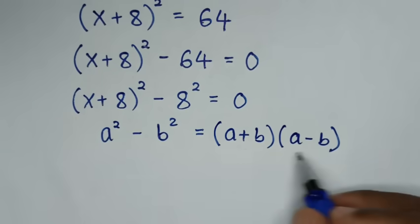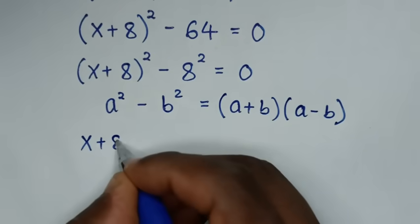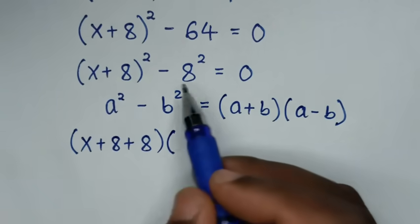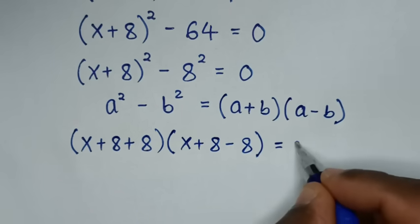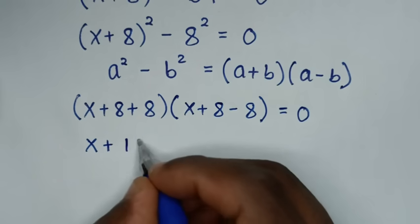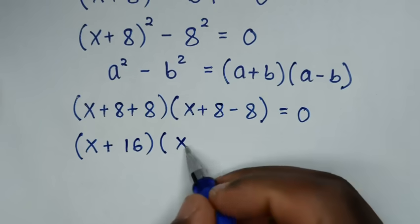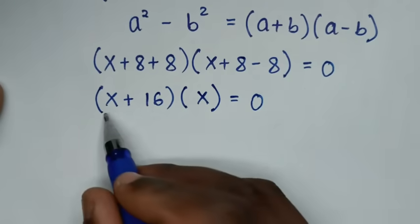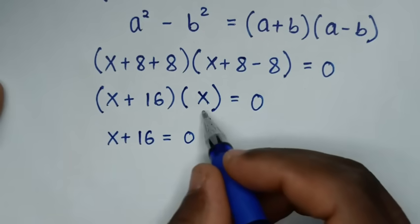By applying this form, (a + b) gives us (x + 8 + 8), and (a − b) gives us (x + 8 − 8), so (x + 8 + 8)(x + 8 − 8) = 0. This simplifies to (x + 16)(x) = 0. Now from here we have two solutions: the first solution is x + 16 = 0, and the second solution is x = 0.